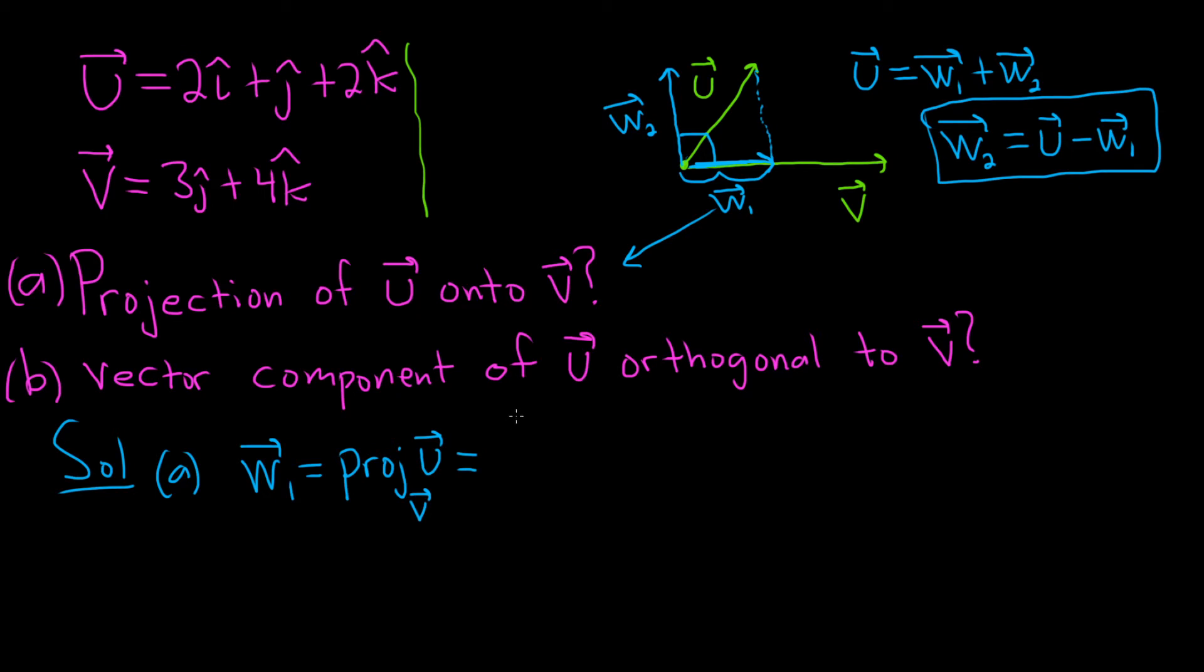The formula says that the numerator is u dot v, the denominator is the magnitude of v squared, and that gets multiplied by v.